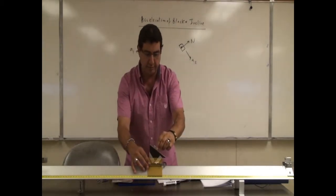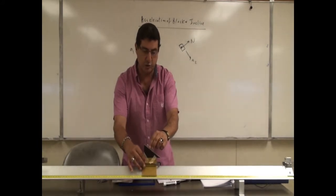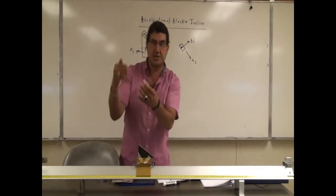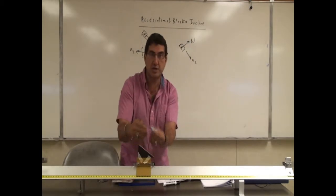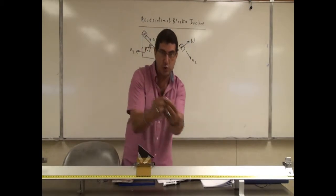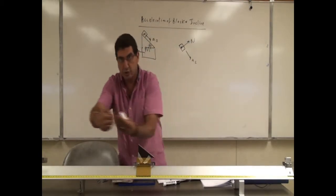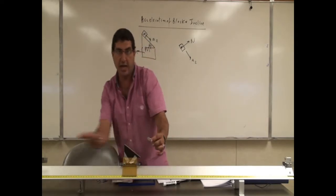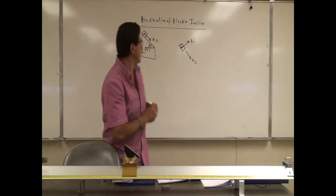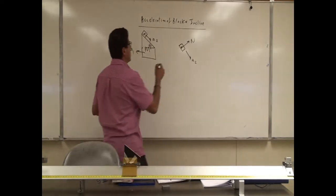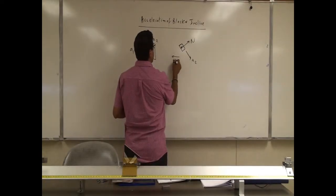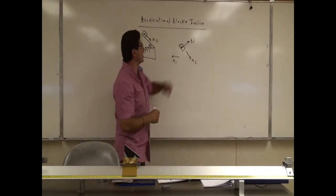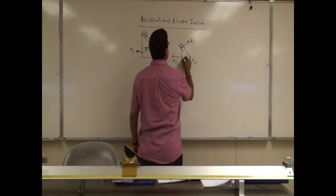As the block goes down and the incline goes to the left, the block has two accelerations: an acceleration A2 with respect to the incline, and because the incline is going this way, it also has an acceleration A1 that way. So it's got two accelerations. Then you've got here mg.